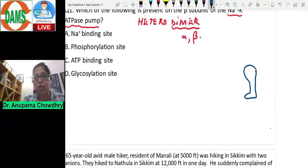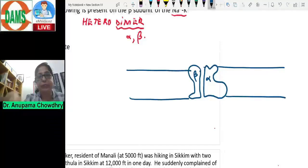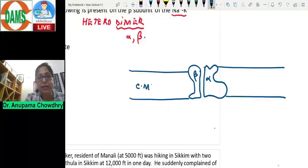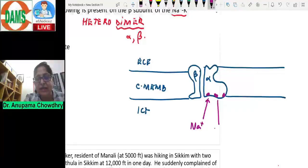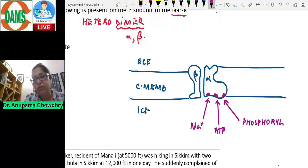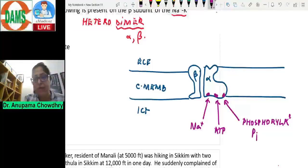The beta subunit is the smaller one; alpha is the larger one with a molecular weight almost twice the size of beta. Looking at the cell membrane with ECF and ICF: the alpha subunit has three binding sites on the inside — the sodium binding site, the ATP binding site, and the phosphorylation site. The sodium-potassium ATPase breaks down ATP to ADP plus inorganic phosphorus plus energy, and that inorganic phosphorus goes to the phosphorylation site.